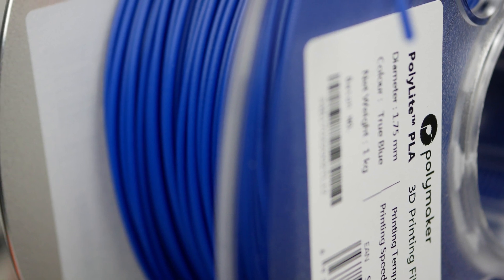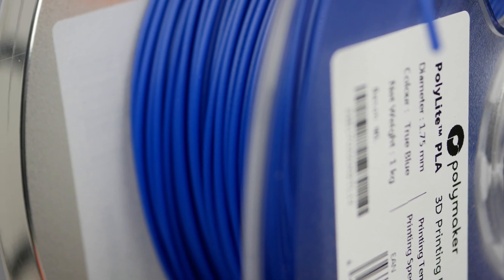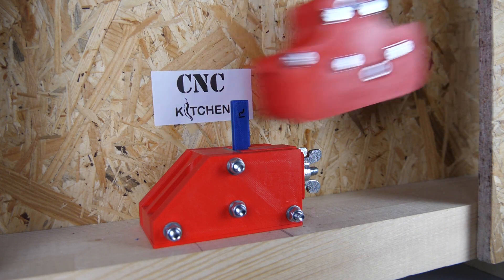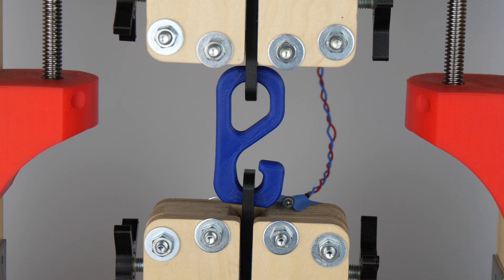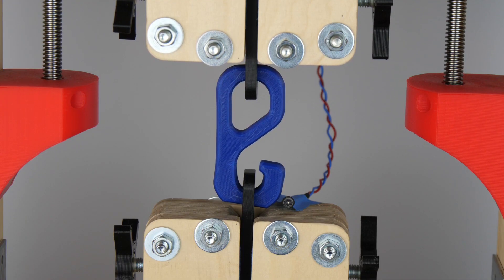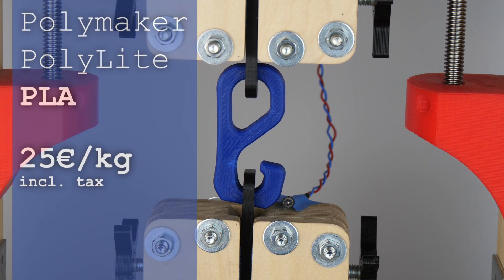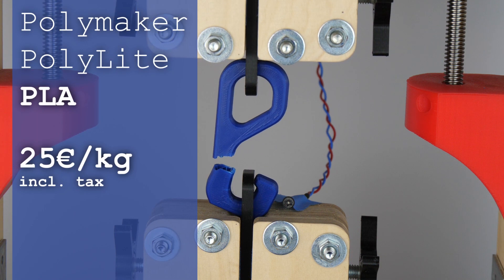Polylight PLA is Polymaker's approach to get into the mass 3D printing market. They provided a roll of blue PLA filament which I put through its paces. The 1kg rolls are reasonably priced at around 25€ per kilogram and are sold over Amazon.